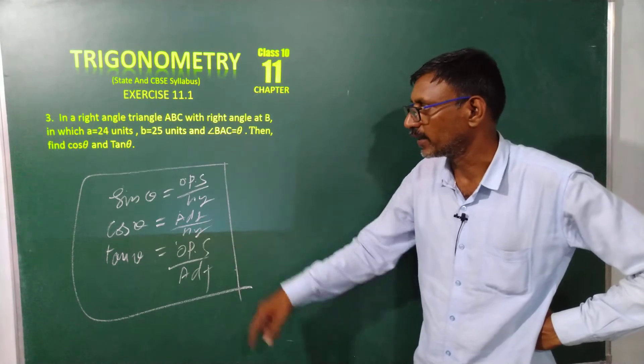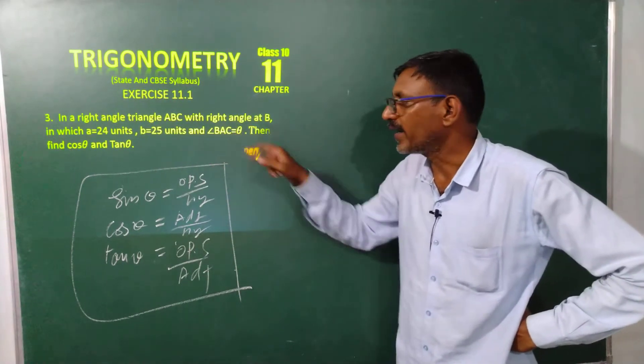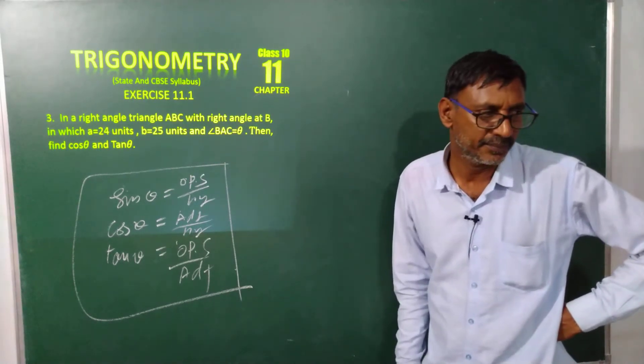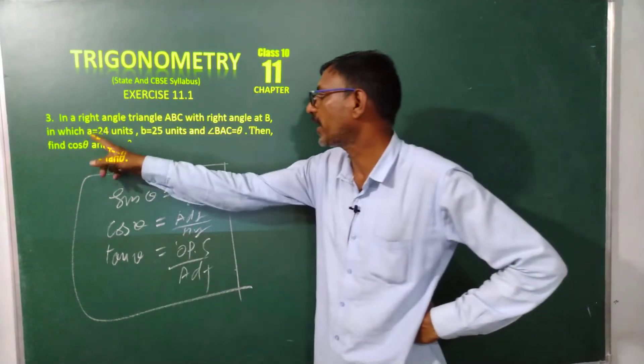So cos theta and tan theta we need to find. Here A, B and angle is given, but sides are not given. First we identify the sides with the help of the angle.